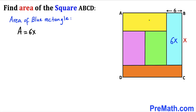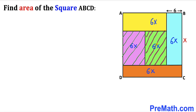Since the area of all rectangles is identical, the area of the yellow rectangle is 6x, the area of the purple rectangle is 6x, and the area of the green rectangle is 6x as well.